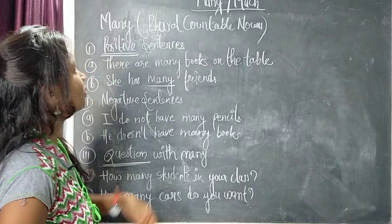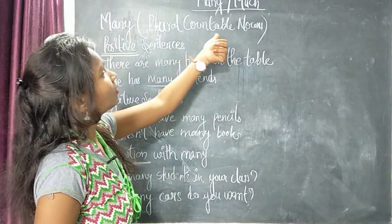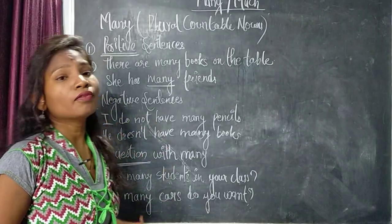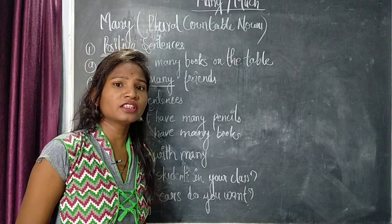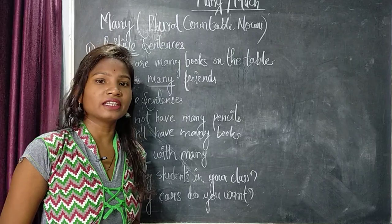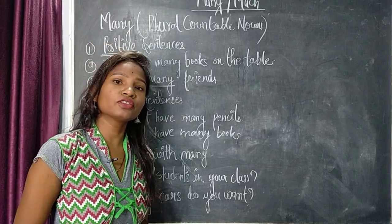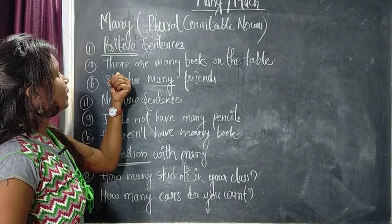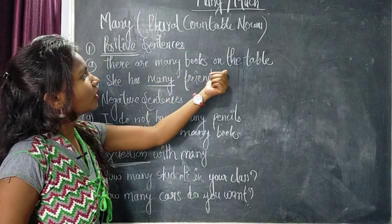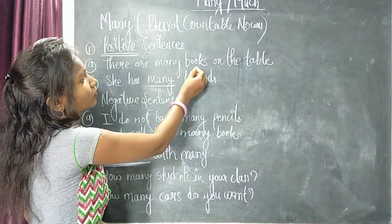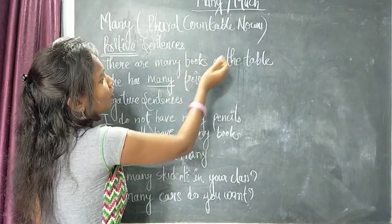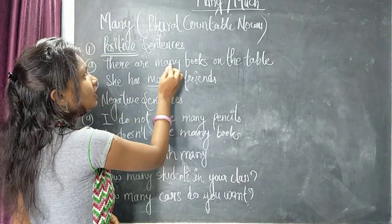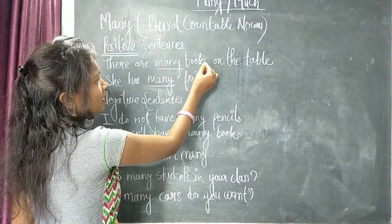So many is used with plural countable nouns — in positive sentences, negative sentences, and question sentences. First of all, we will see in positive sentences. So: 'There are many books on the table.' See here, books is a plural countable noun. That's why we use many here.